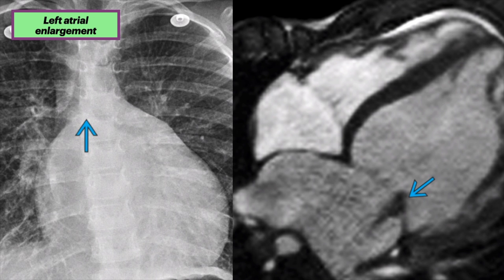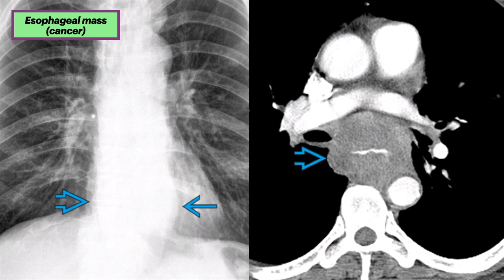This was overall consistent with dilated cardiomyopathy. Here is a case of an esophageal mass — cancer. The X-ray on the left shows abnormal convexity of the lower third of the azagoesophageal recess and a left retrocardiac mass-like opacity. This patient presented with severe dysphagia. The axial CT on the right shows marked circumferential mural thickening of the lower esophagus, producing abnormal convexity of the azagoesophageal recess.